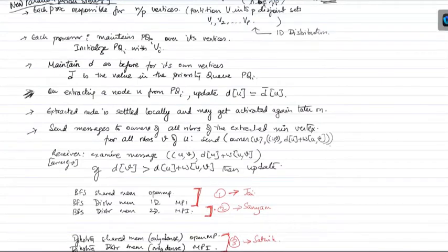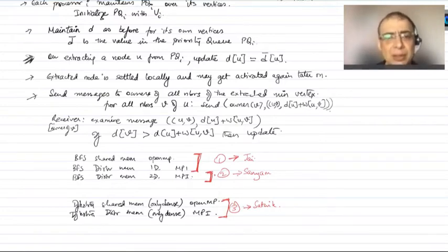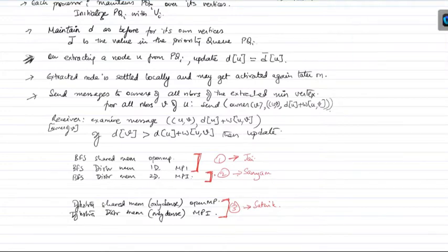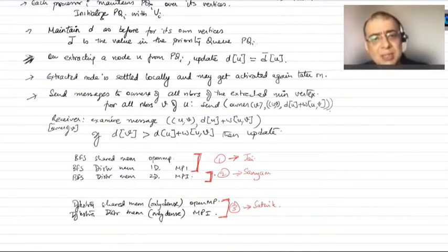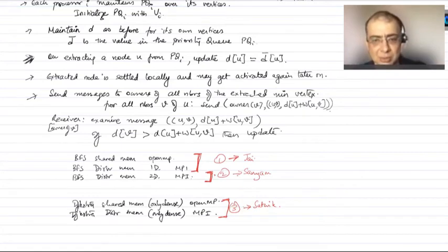Any node that is extracted is considered to be settled locally. A critical point is that this node may get activated again later on, and we'll discuss that in a while. We prepare messages for all the neighboring vertices and send those messages. The receiver receives all the messages and checks if it has come across a new shortest distance. This is called the relaxation operation. If the new relaxation results in a better value of the shortest distance, then it goes and updates the shortest distance.